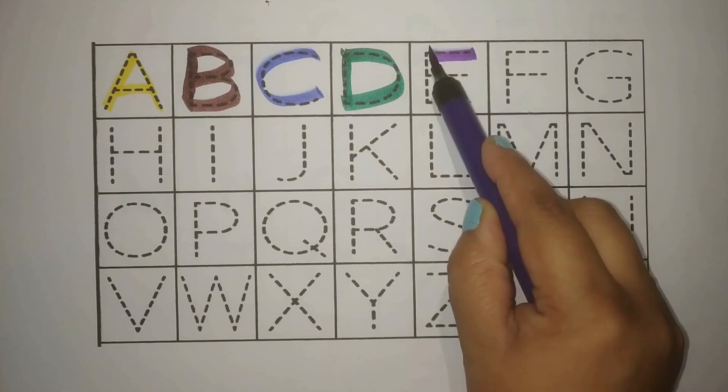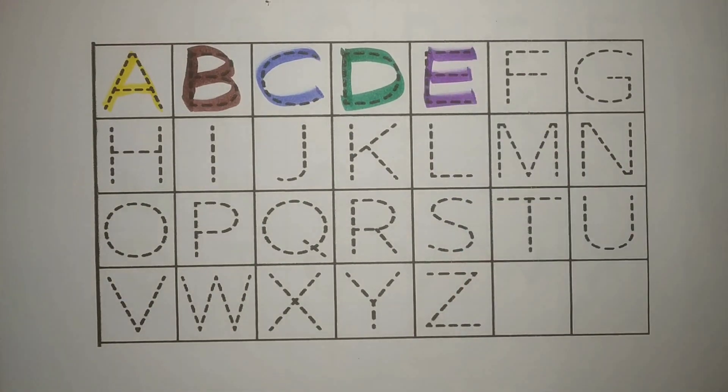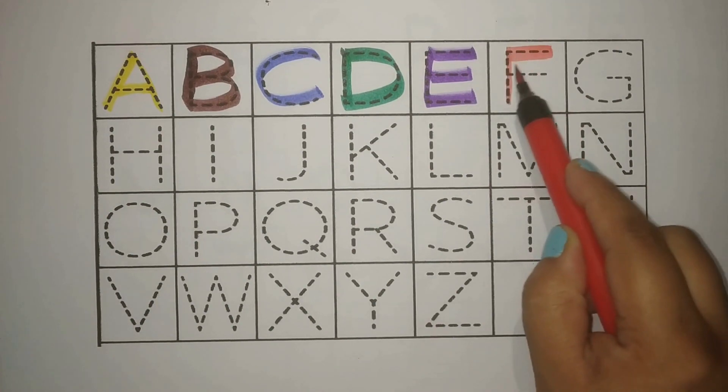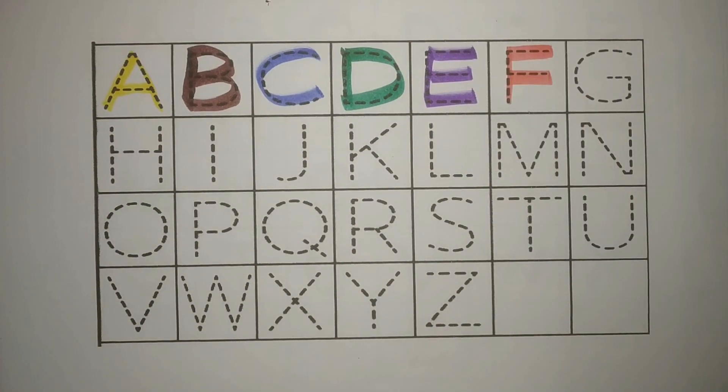Purple, E, E for egg, under. Red, F, F for frog, mendak, mendak, kata, tatar.